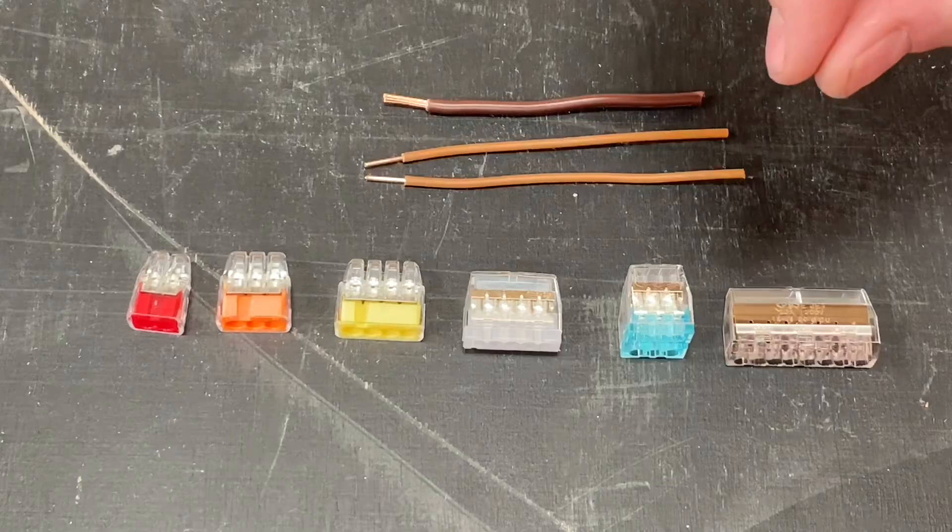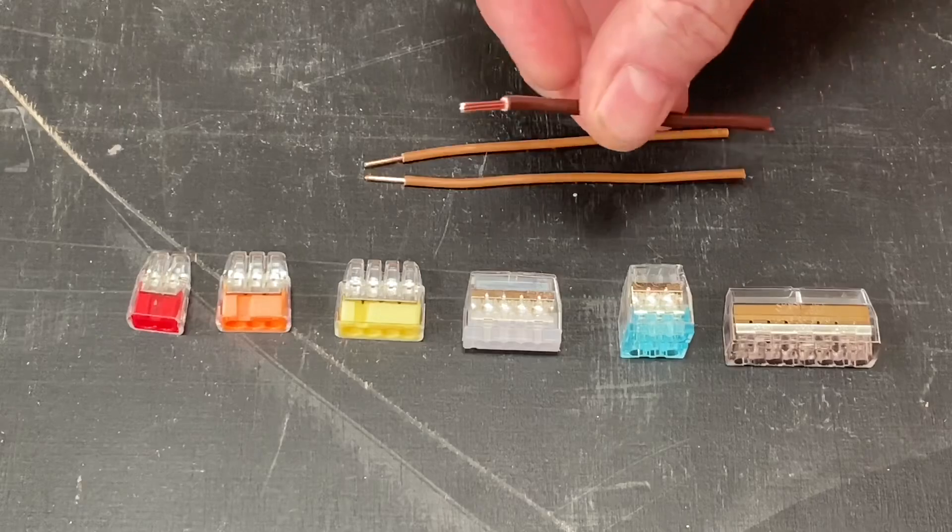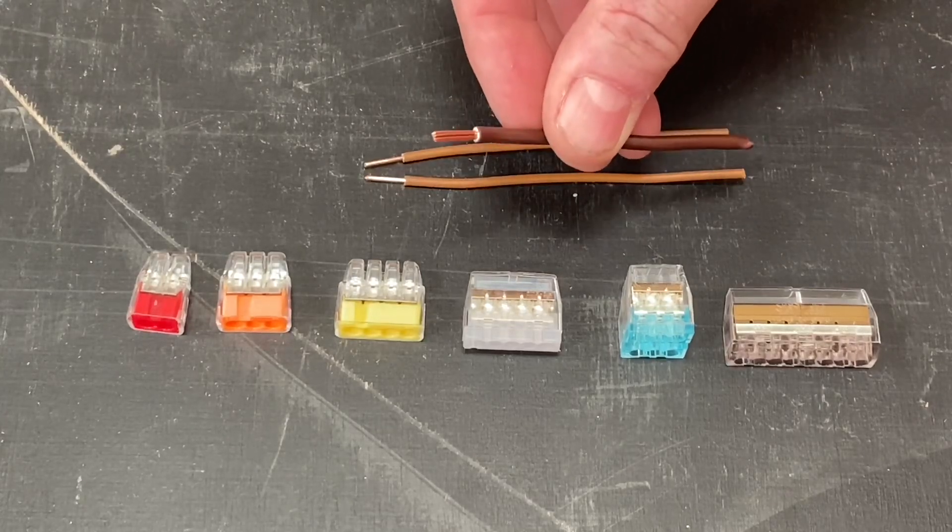They take solid conductors from 0.75 up to 4 millimeters squared, but when we're looking at the stranded variety, they take the 1.5 and 2.5 millimeter squared conductors.